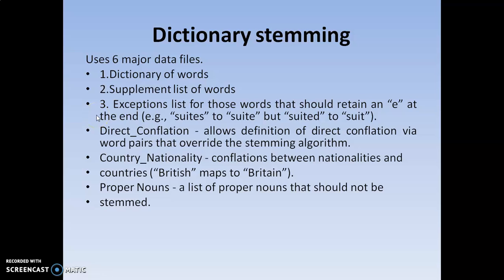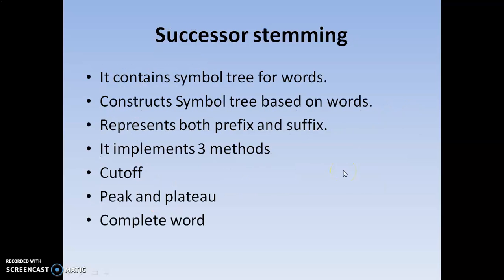So the six major data files used by dictionary stemming are: dictionary of words, supplementary list of words, exception list of words, country-nationality mapping or compilation, direct compilation, and proper nouns.